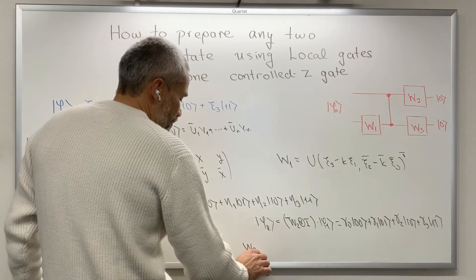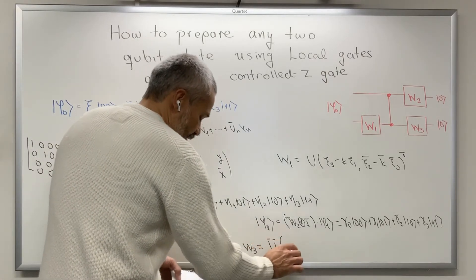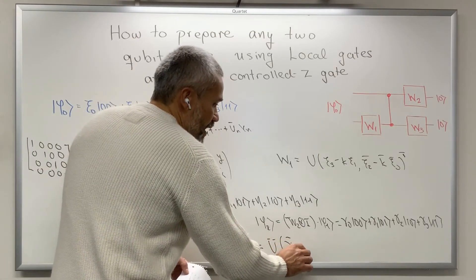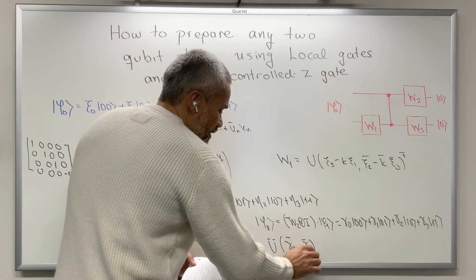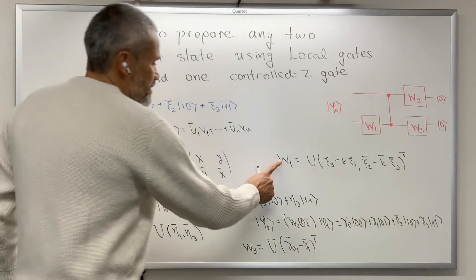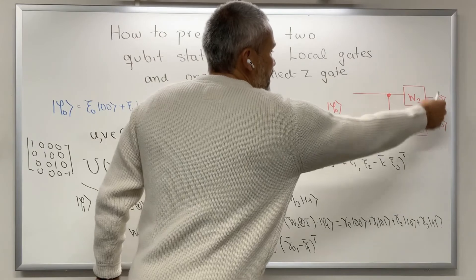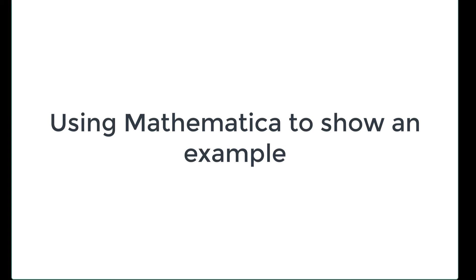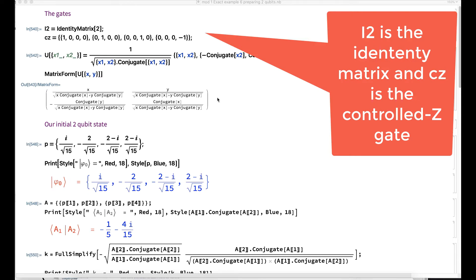Finally, our matrix W3 is the unitary matrix obtained using γ₀* and −γ₁*, and we take the transpose. You can then check that if you use W1, W2, W3 and apply this circuit, it will take you into the basic state |00⟩.